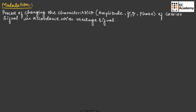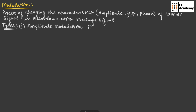So in modulation, we change one of the characteristics of the carrier signal — we might change the amplitude, frequency, or phase of the carrier signal in accordance with the message signal. There are three types of modulation: the first is amplitude modulation, the second is frequency modulation, and the third is phase modulation.